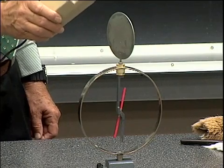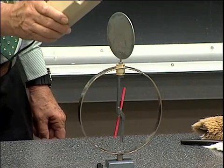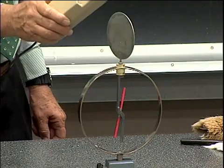Notice the arm swings down, the electroscope discharges as we shine the ultraviolet light onto the zinc plate on top of the electroscope.